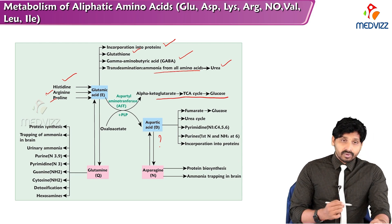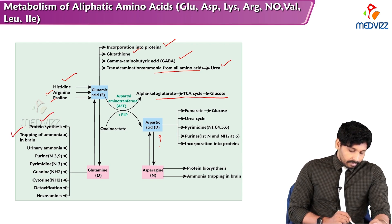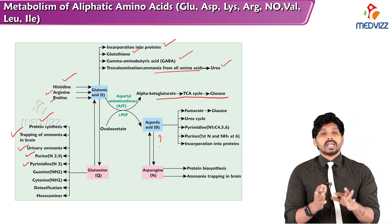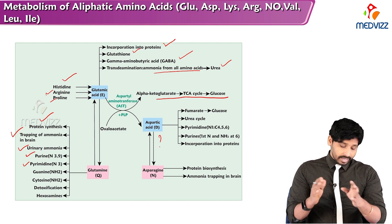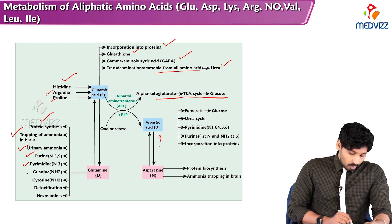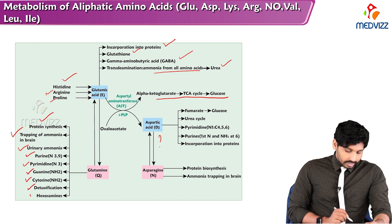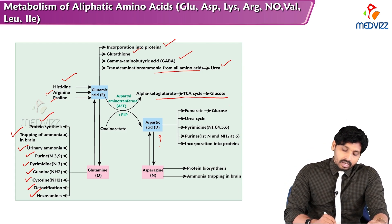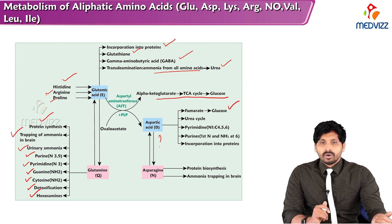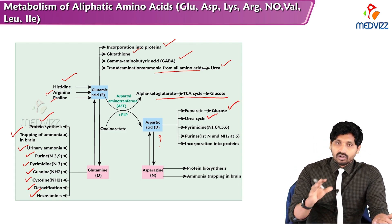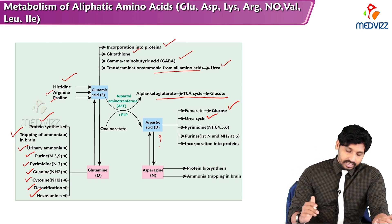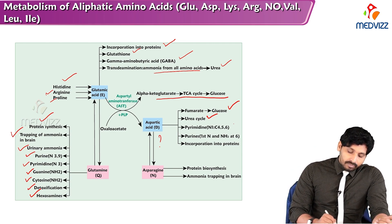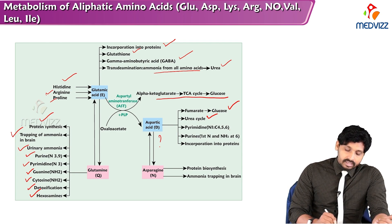Glutamine has a variety of functions: protein synthesis, trapping of ammonia in the brain, urinary ammonia production, purine ring formation (donating nitrogen 3 and 9 of purine and nitrogen 3 of pyrimidine), contributing to guanine and cytosine, and detoxification reactions. Aspartic acid is glucogenic via fumarate formation, involved in the urea cycle (whole molecule incorporated), and contributes carbons 4, 5, 6 and nitrogen 1 of the pyrimidine ring.